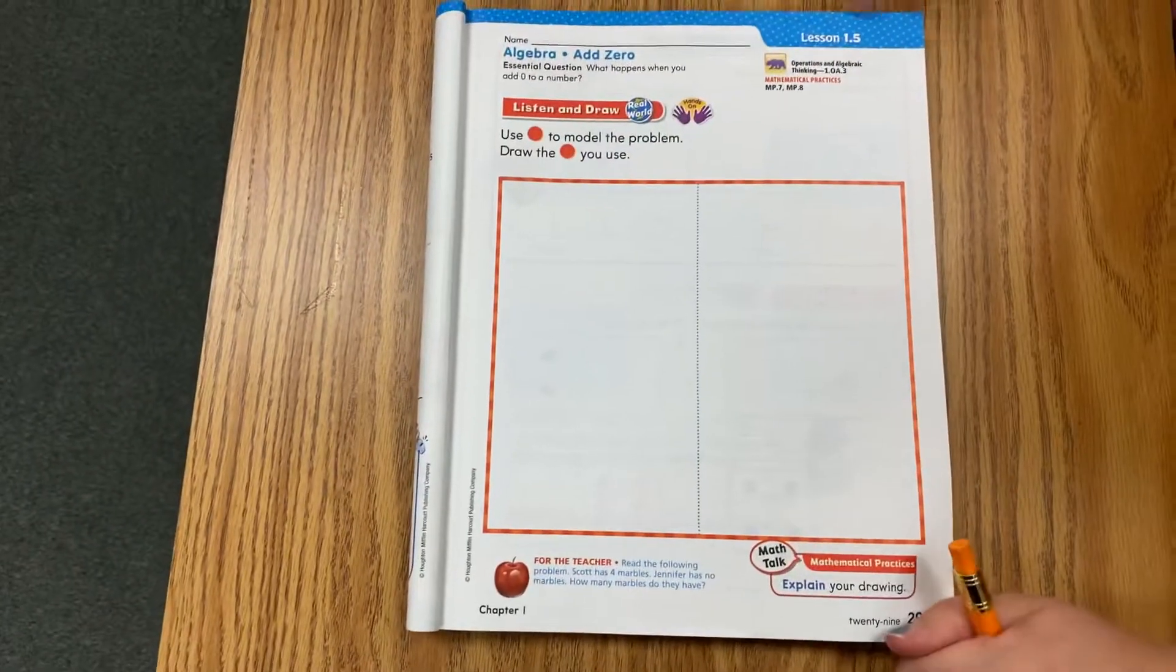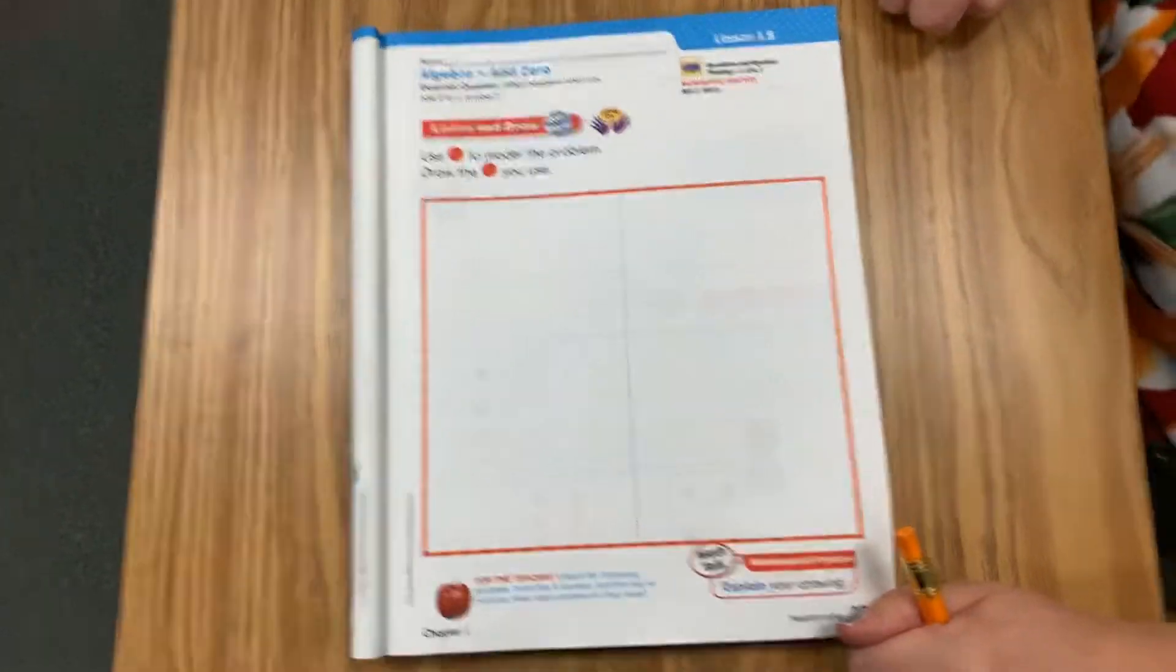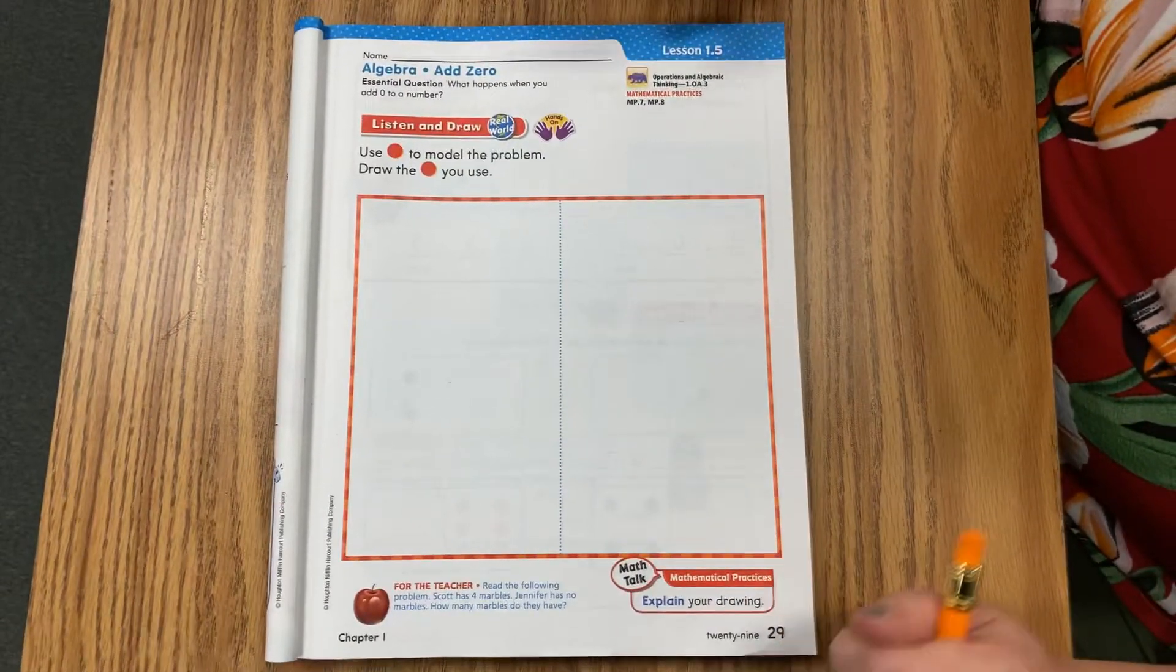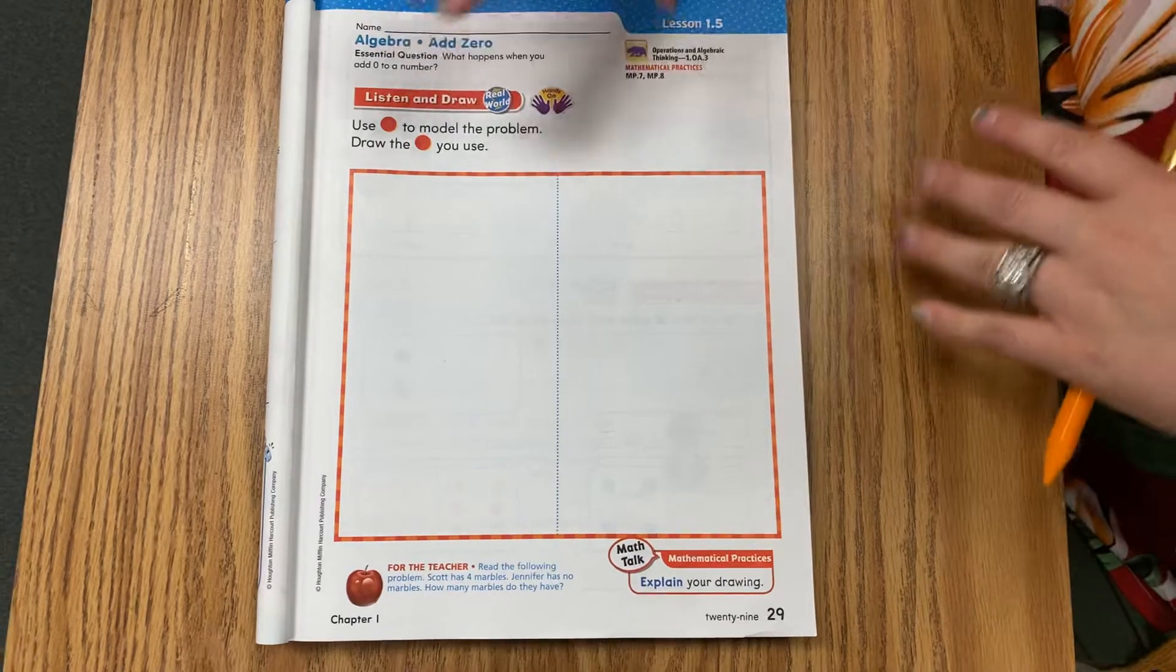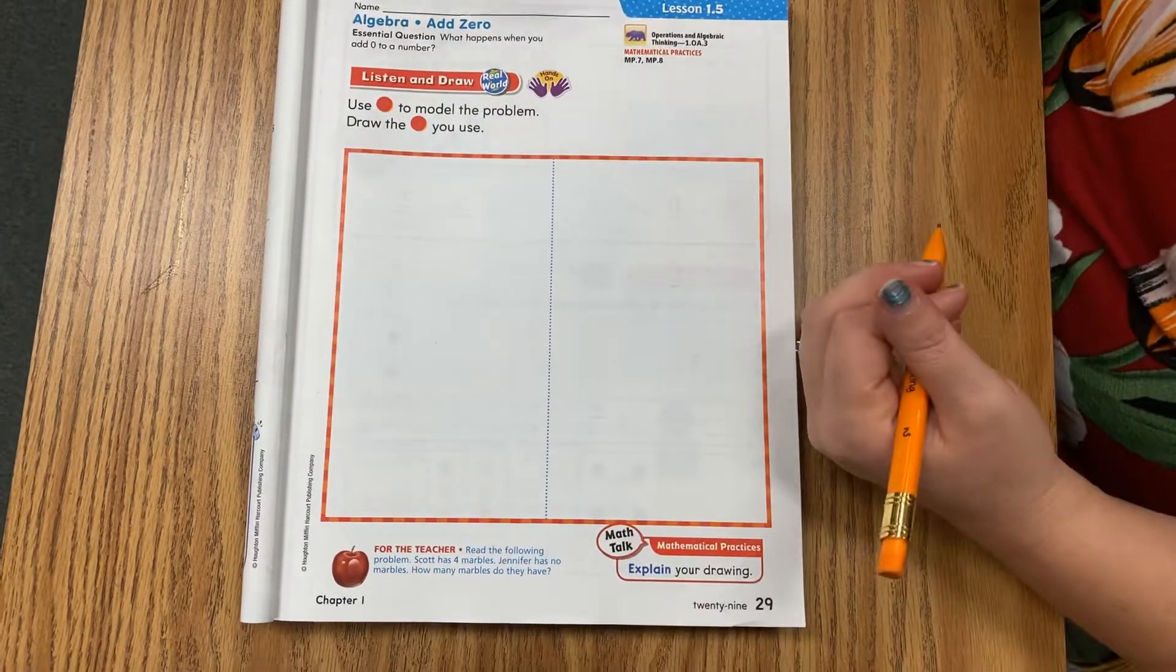In chapter 1, you should see this big red box, and it says adding zero at the top. Alright, today we're going to find out what happens when we add zero to a number. And we are going to solve this using figures. So we are going to use models, our counters, or drawings of our dots, in order to solve adding zero.